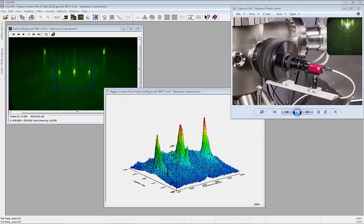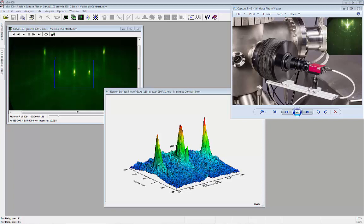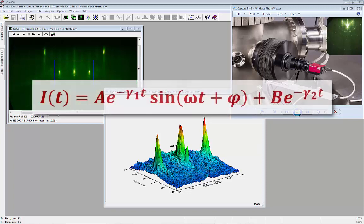In the case of layer-by-layer, also known as Frank-Van der Merwe growth, the intensity of the RHEED spots oscillates with a period equal to the time required to deposit a single monolayer. Note that this does not apply to step flow or island growth. These oscillations can be fitted by a damped sine function to determine the growth rate in monolayers per second.